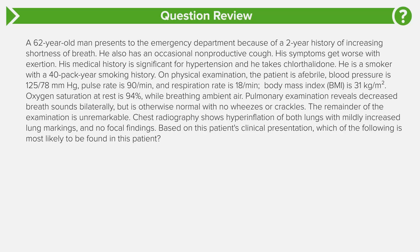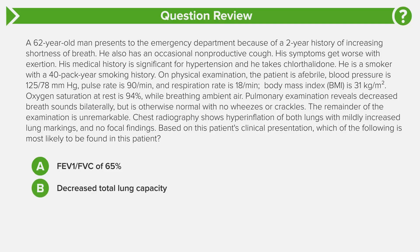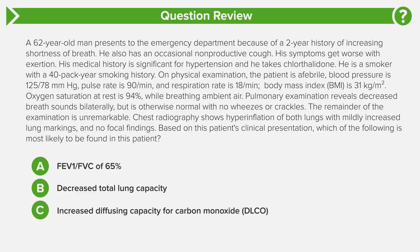Based on this patient's clinical presentation, which of the following is most likely to be found in this patient? Answer choice A, FEV1 to FVC ratio of 65%. Answer choice B, decreased total lung capacity. Answer choice C, increased DLCO. Answer choice D, metabolic acidosis. And answer choice E, FEV1 of 82%. Now take a moment to come to the answer by yourself before we go through it together.